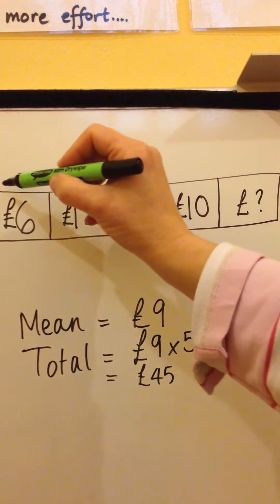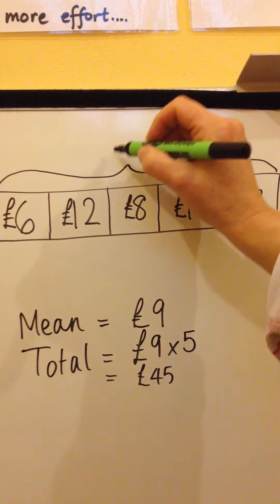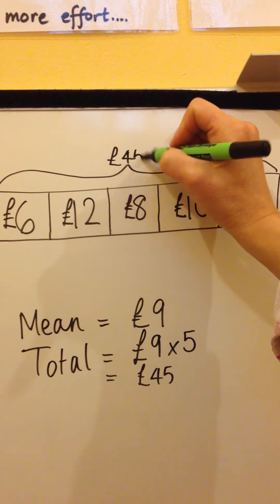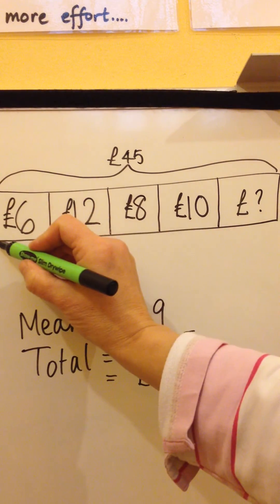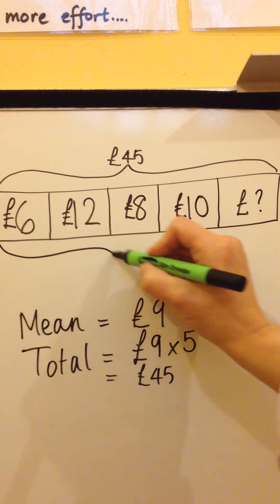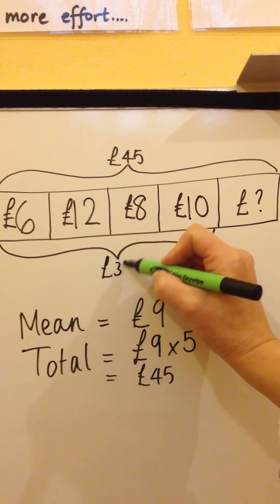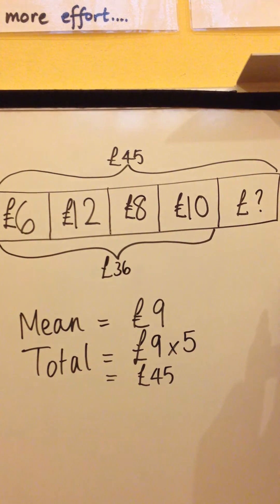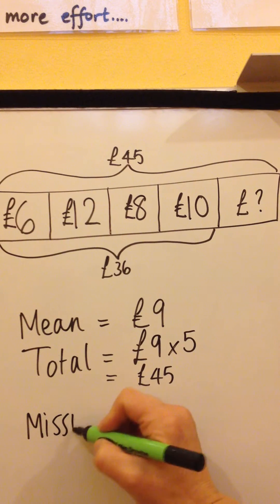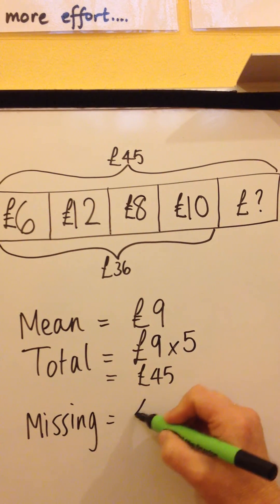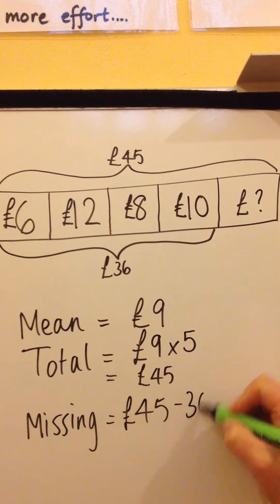So we know that all five values must add up to £45. But what's the missing value? We add up the four values that we know, which gives us £36. Therefore, the missing value is £45 take away £36, which gives us £9.